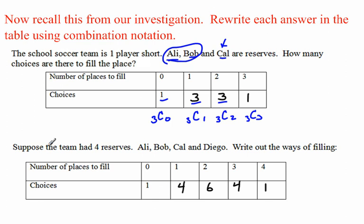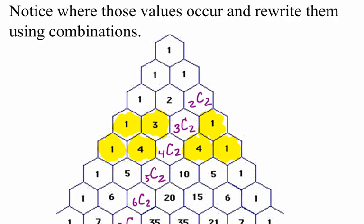Let's take those numbers, 1, 3, 3, 1, and take a look. Where do they appear in Pascal's triangle? Right here, 1, 3, 3, 1. And so we can replace those with 3C0, this is choosing no one; 3C1, choosing one; 3C2, and 3C3.